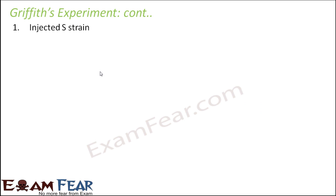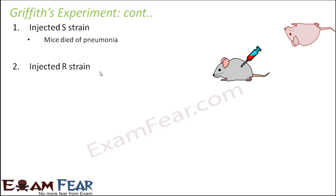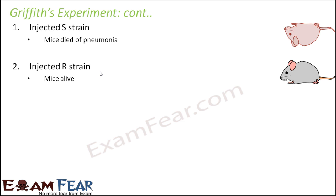In Griffith's experiment, he first injected the S strain of bacteria into a mouse, and the mouse died of pneumonia because the S strain is virulent. In the second set, he injected the R strain into a mouse. Since the R strain is non-virulent, the mouse was alive and healthy with no signs of pneumonia. This proved that the S strain was virulent, but the R strain was not.